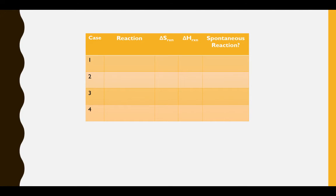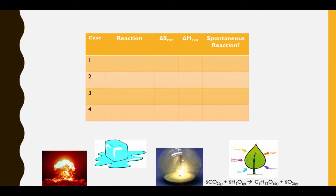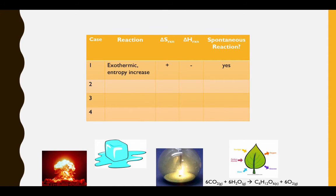Let's look at some specific reactions and consider their enthalpy changes and entropy changes, and whether or not they're spontaneous. The first reaction is an explosion. As you can predict, this is an exothermic reaction, giving us a negative delta H. Likewise, entropy increases in an explosion, giving us a positive delta S. Here we see two thermodynamically favorable factors, so this process will always be spontaneous under any conditions.